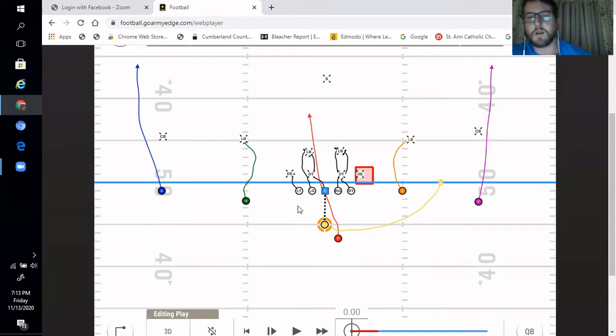Here we are running the inside zone left. With every inside zone run, we are always faking the quarterback run. Just like with the inside zone, we are still going to leave that backside defensive end unblocked.